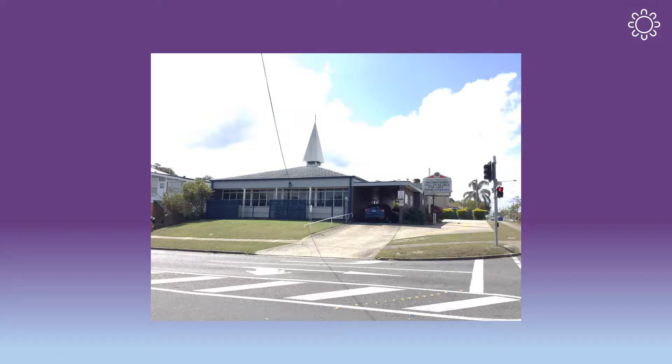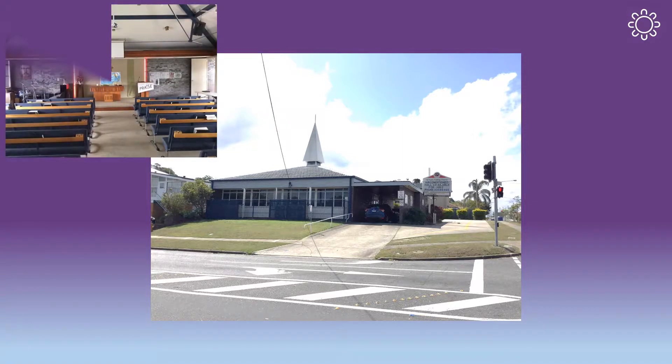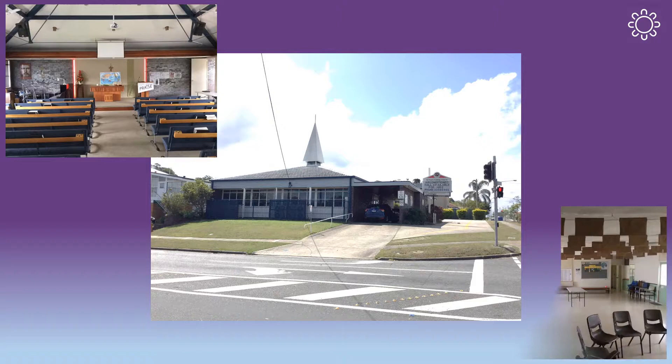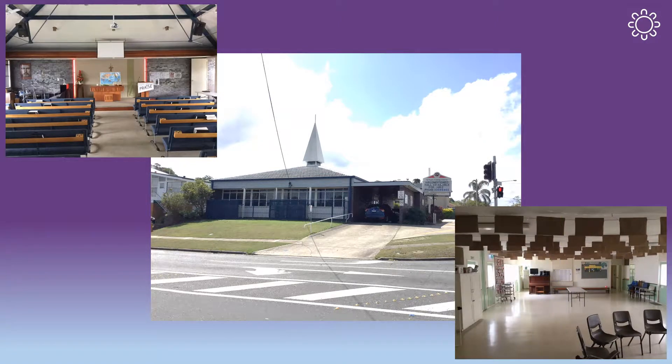St Paul's Uniting Church Stafford is located at 242 Webster Road, Stafford. The building is a split level building. The lower level serves as the church auditorium. The middle level contains the church offices and the upper level includes the hall and kitchen. There are multiple exits from the building and an assembly point in front of the manse on Minamine Street.